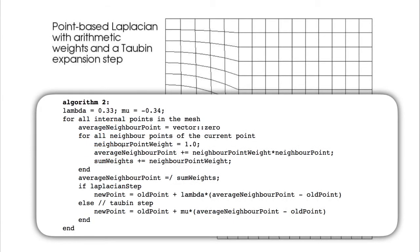It's also pretty straightforward to implement. This lambda mu values here, these are what Taubin recommends in his original papers. It's a similar loop for calculating a new point as before. And then at the end, we just say if it's a Laplacian step, then we apply a shrinkage. Otherwise, if it's a Taubin step, then we apply an expansion.